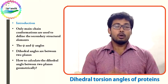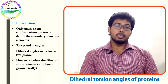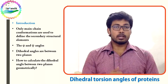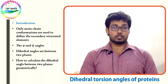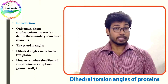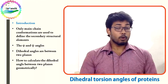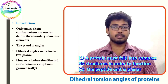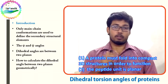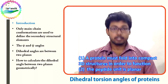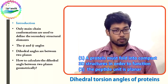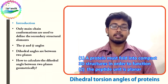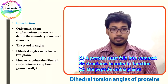There are two points to keep in mind to understand why dihedral torsion angles of proteins are so important. First, a protein must fold into a compact, stable structure in order to function. Second, the peptide unit is kept rigid — it cannot rotate.